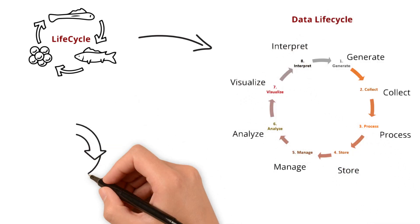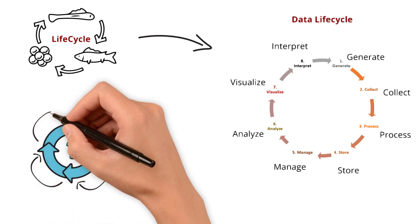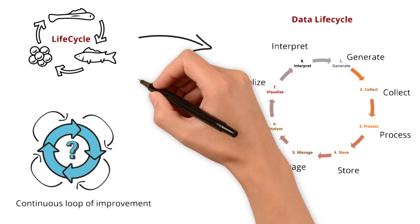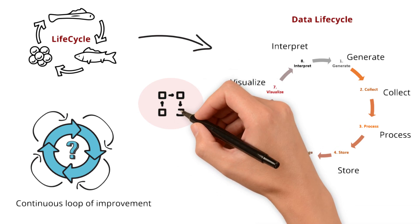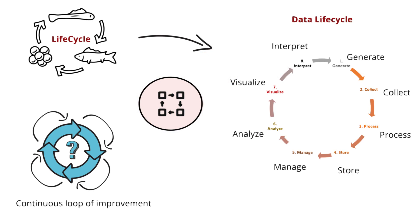As we delve into these stages, let's understand why the data lifecycle is often described as a cycle. Because insights gathered from one data stage inform the next, creating a continuous loop of improvement and refinement. In this way, the final step of the process seamlessly feeds back into the first, which develops a dynamic and iterative approach to data management.